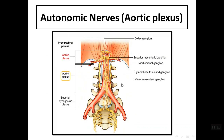The nerve supply passing through the spermatic cord consists of nerve fibers from the aortic plexus, which are autonomic nerves supplying the testis.